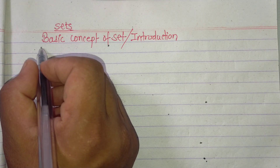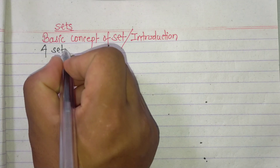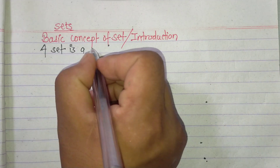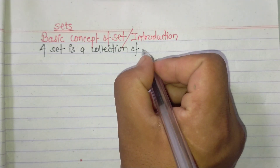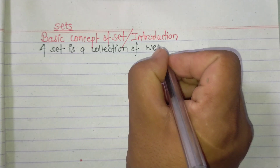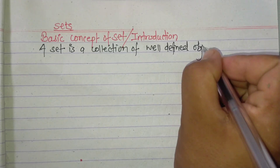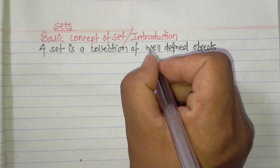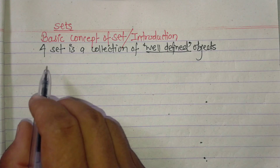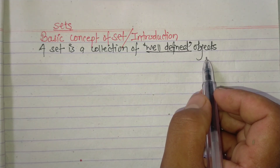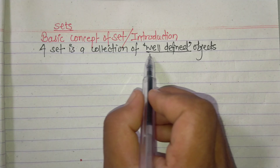Simply, a set is a collection of well-defined objects. In simple language, a set is a collection of well-defined objects.